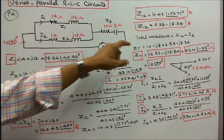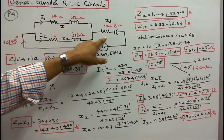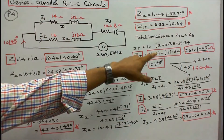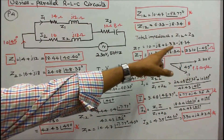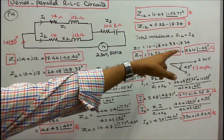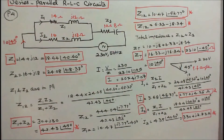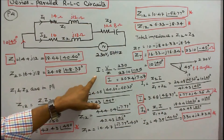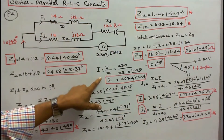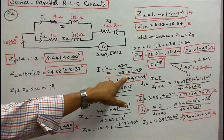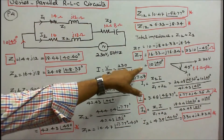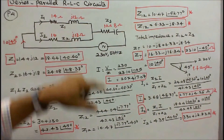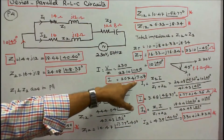The total impedance = equivalent impedance + Z3 = 16.33 − j16.34 in rectangular form, or 23.10∠−45° ohms in polar form. I know the supply voltage 230 V and total impedance, so total current I = V/Z = 230 / 23.10∠−45° = 10∠45° in polar form, or 7.07 + j7.07 amps in rectangular form.